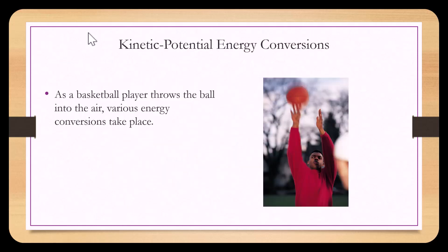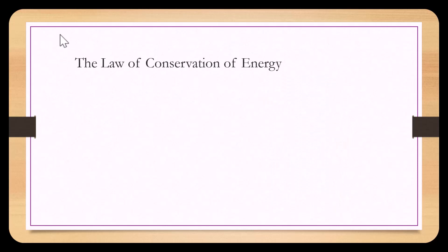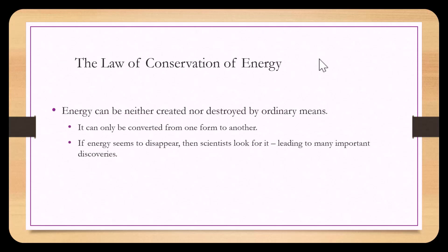Looking at a common everyday event, as a basketball player throws a ball into the air, various energy conversions take place. The law of conservation of energy says that energy can neither be created nor destroyed by ordinary means — an example of something not ordinary would be a nuclear bomb. Energy can only be converted from one form to another. With the roller coaster example, the energy was not lost; it converted from potential to kinetic. If energy does seem to disappear, scientists look for it, leading to many important discoveries.